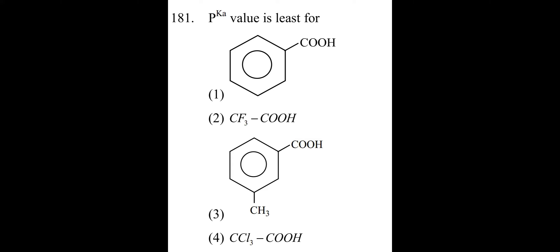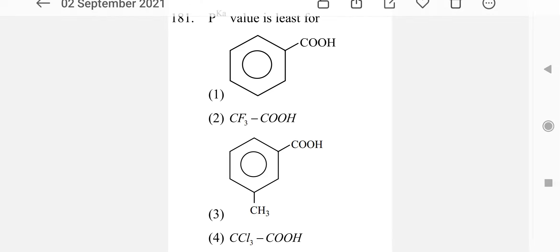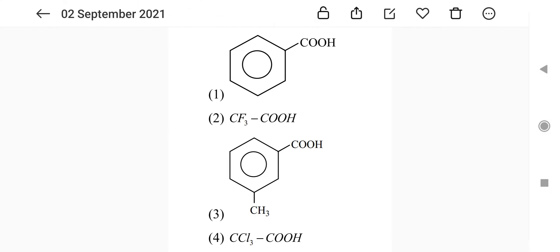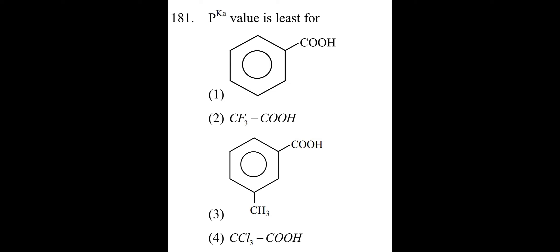CF3 has three -I groups and CCl3 has three -I groups, but fluorine is a stronger withdrawing group. So CF3 is best. CF3COOH is a more stronger acid than CCl3COOH.